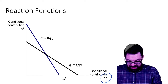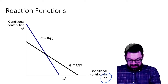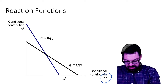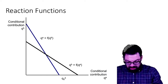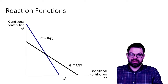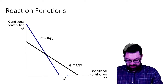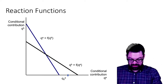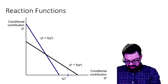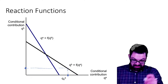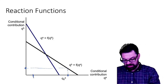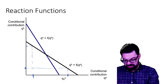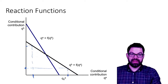The black line is also a reaction function, but this time for player B. If player A chooses a very high level of contribution, the optimal action for player B is to choose a low level. Conversely, if player A chooses a low level of contribution, the optimal contribution level for player B is actually high.